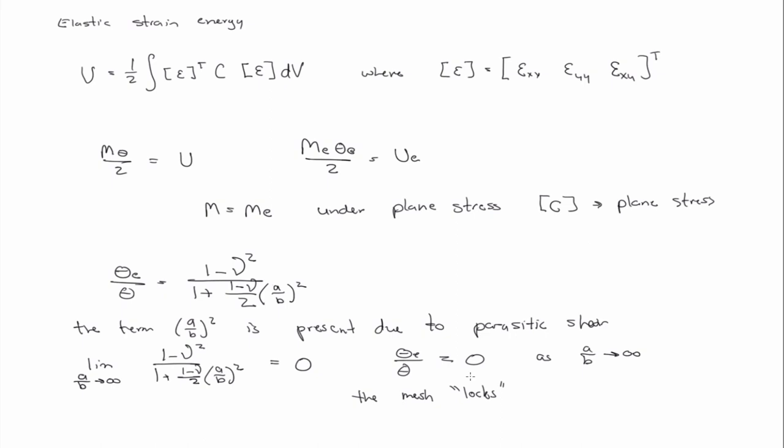locks. So what is, think about, what is A over B, right? A and B are the width and height of the element. So if B is, if that ratio, if the element becomes very long and slender, right? If that ratio is very bad, then, or as it gets worse, then the element, the mesh will lock. So it won't deform.